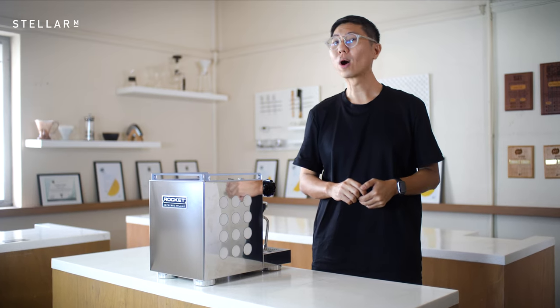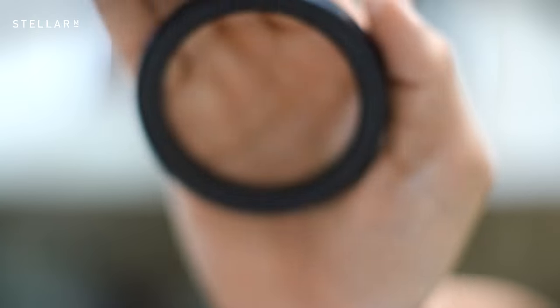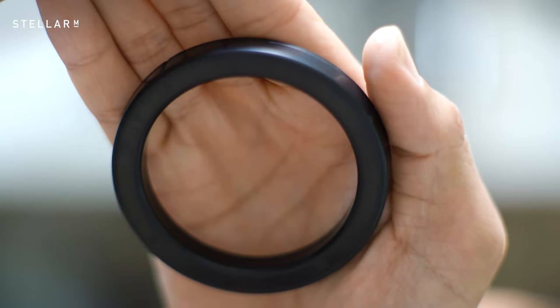What is a group head gasket and why should you change it? The group head gasket is this rubber ring. It ensures a good seal between the portafilter and the group head.